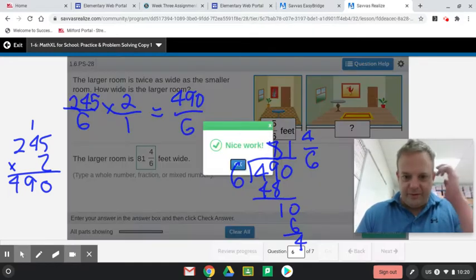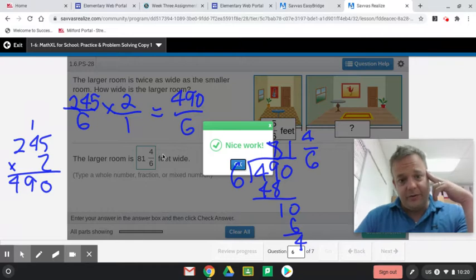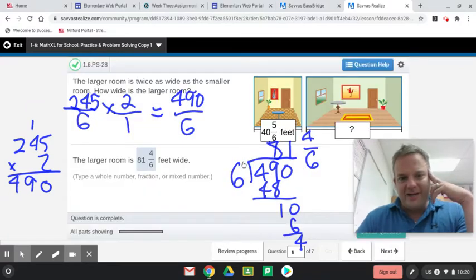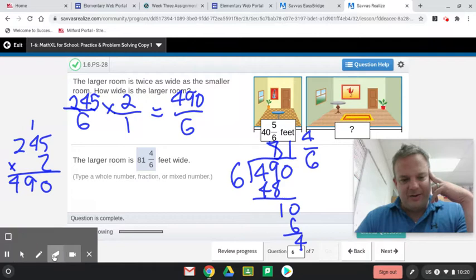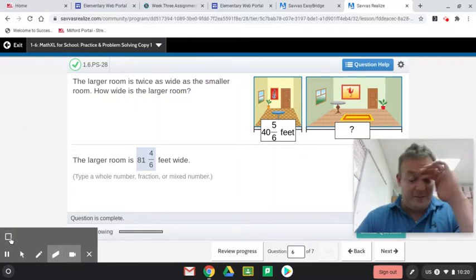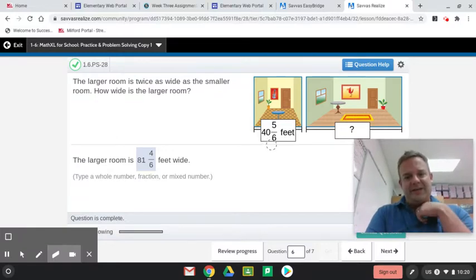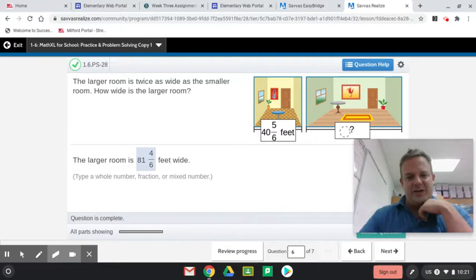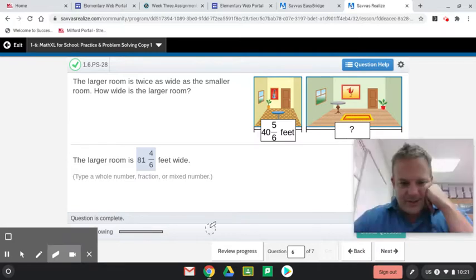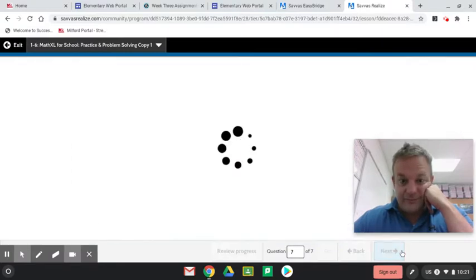Well, let's see if that works. We could reduce that 4 sixths to 2 thirds. 81 and 2 thirds. Isn't that weird, guys, that we were dividing the whole time and then they throw in one multiplication problem? I mean, it makes sense that this room here is the smaller one, and then you've got to go twice as much. But I just was thinking all this was division. Just shows you, never know.